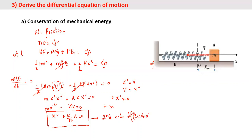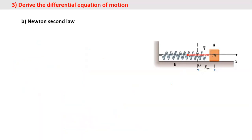Now why do we need this equation? When we solve it and find the solution, the result will be x(t) — the position of the object at any instant. From x(t) we can also find the velocity v and the acceleration, giving us a complete study of the motion at any instant. Another method to find the differential equation is Newton's second law.